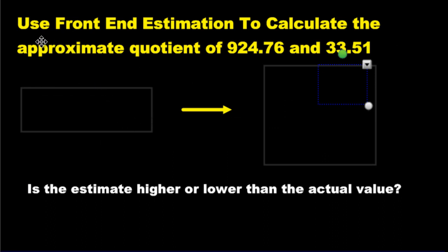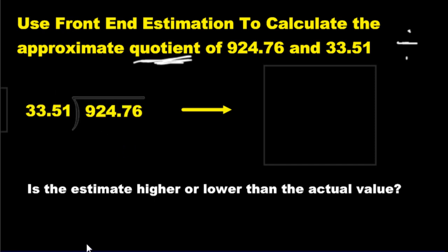And the last one, use front end estimation to calculate the approximate quotient. Even if you don't know what quotient is, which I hope you do, you should know quotient by now. But even if you didn't know, we've done product, we've done sum, we've done difference. The only thing missing now is division and quotient means divide. So we have to divide, but how do we divide? We divide using long division. We're going to take 924.76. We're going to divide by 33.51. Same strategy.